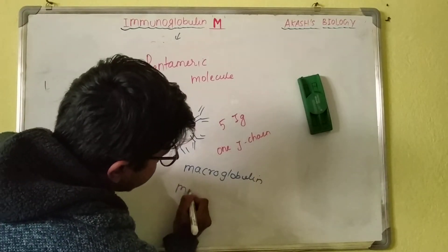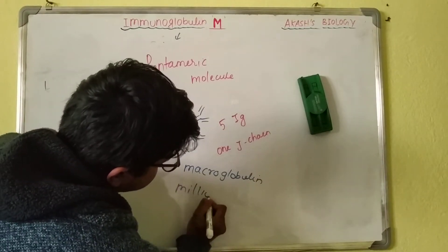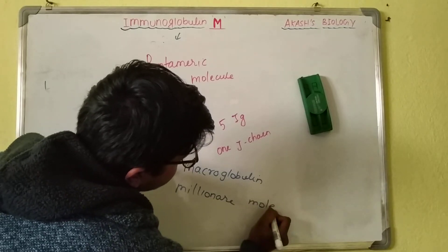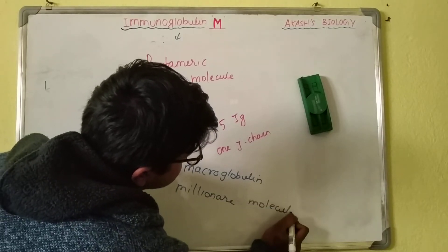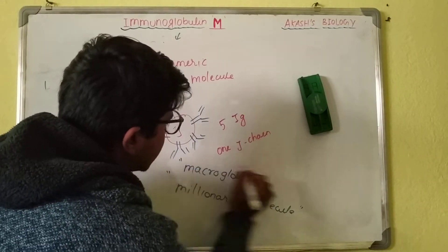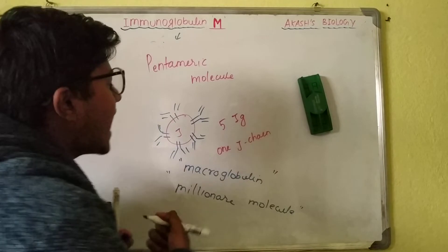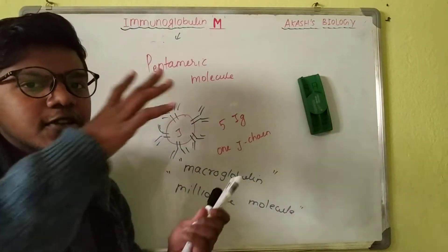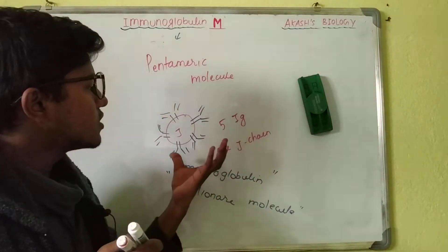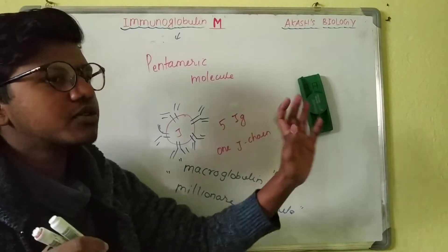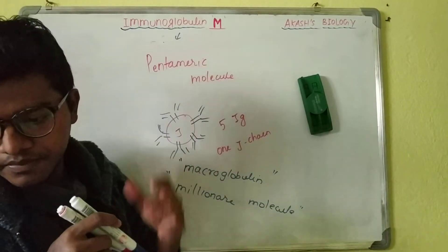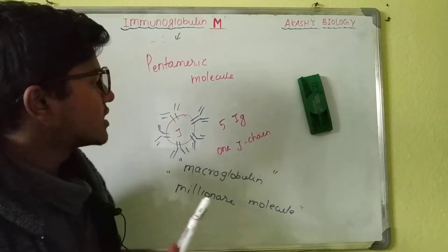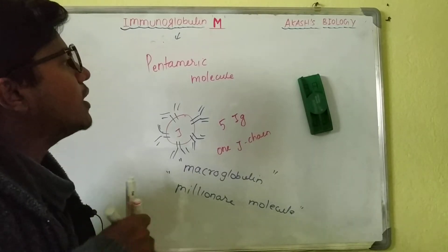That is why IgM is often known as macroglobulin or the millenary molecule. You might be asked these nicknames in entrance examinations, because IgM is present as a pentamer — not a dimer or trimer.